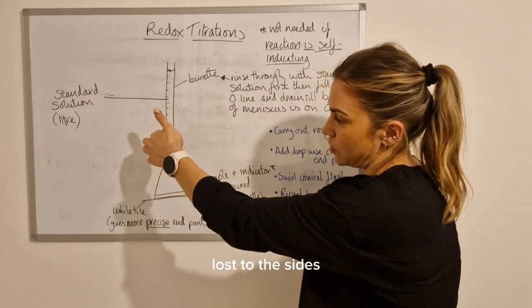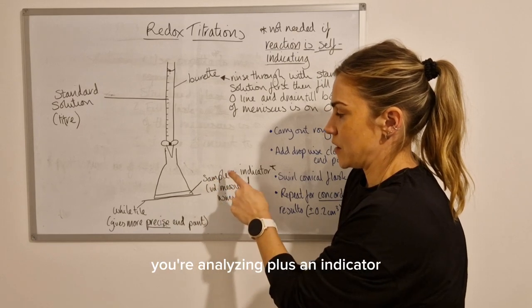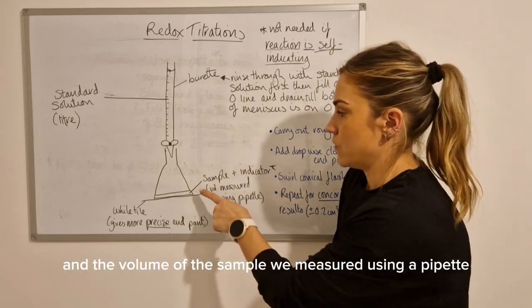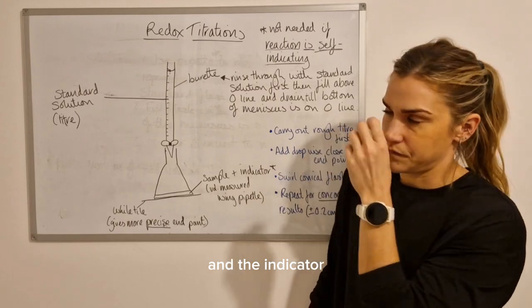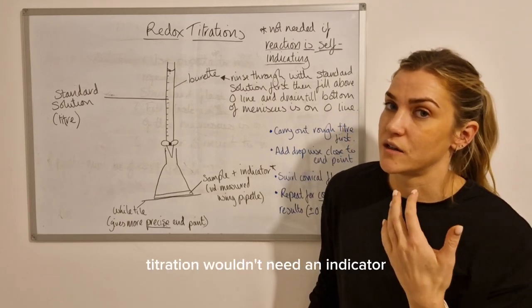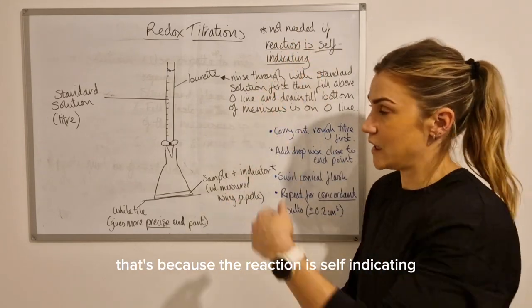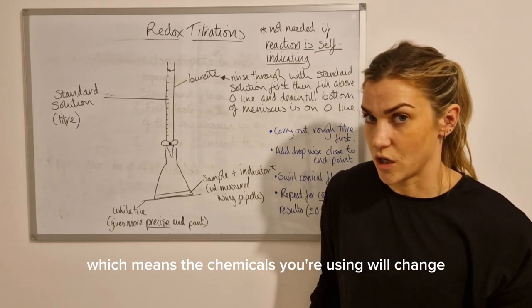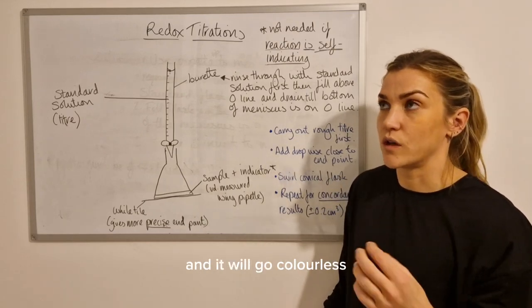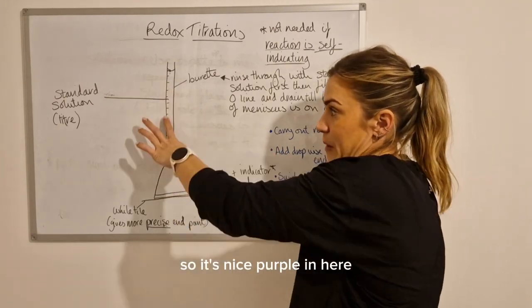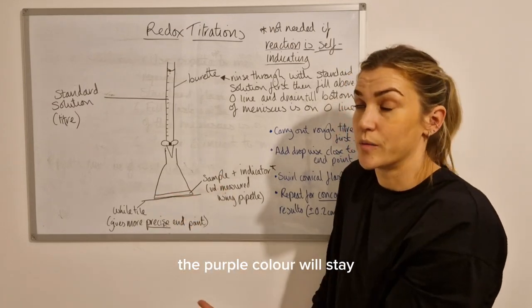You've then underneath got your conical flask. The burette should be in the neck of the conical flask so that none of your standard solution is going to be lost out the sides. And then within your conical flask you'll have your sample you're analyzing plus an indicator. The volume of the sample we measure using a pipette because that's the most accurate volume measurement. And the indicator - they quite often like to ask you why a titration wouldn't need an indicator. If it doesn't need an indicator, that's because the reaction is self-indicating, which means the chemicals you're using will change color on their own. So a common one for that is permanganate - acidified permanganate solution. It's a nice purple color and it will go colorless when you put it in the conical flask. So it's nice purple in here, it goes in, it turns colorless, and then once you've added enough of it, the purple color will stay.